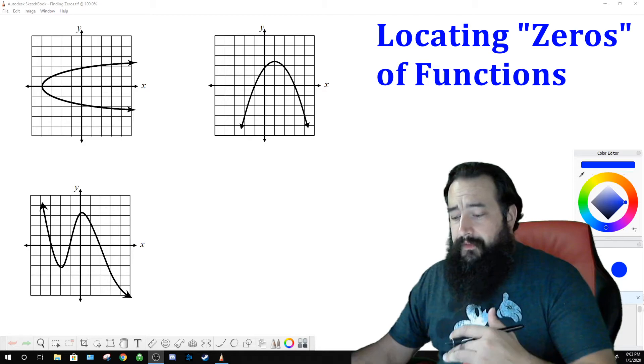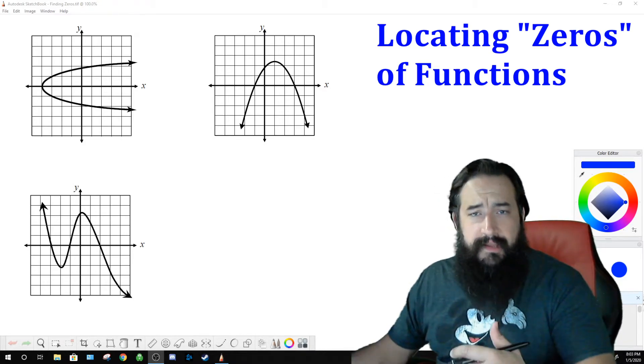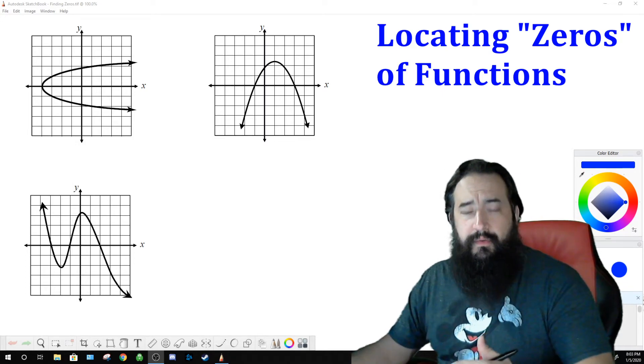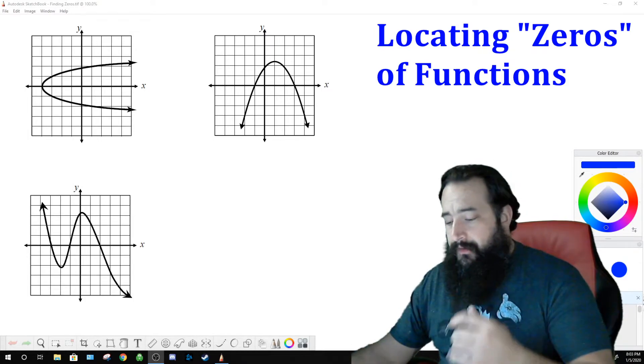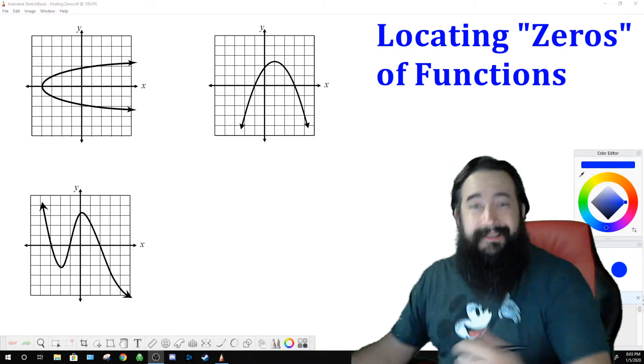Alright? So, there are locations on the graph and all locations have two coordinates, one x and one y. If you are finding a zero, or a solution, or a root, or an x-intercept, it is an x-value only. Now, the y-value at a zero is zero. That's why they call them zeros.